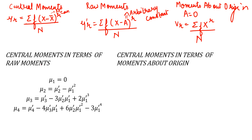If we want to find central moments in terms of raw moments — that is, if we have values of raw moments and need to find central moments — the formulas are: μ1 = 0 (first central moment is always zero), μ2 = μ'2 − (μ'1)², μ3 = μ'3 − 3μ'2·μ'1 + 2(μ'1)³, and μ4 = μ'4 − 4μ'3·μ'1 + 6μ'2·(μ'1)² − 3(μ'1)⁴.